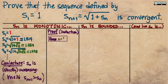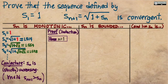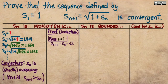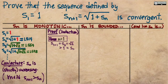Like many proofs quantified on all natural numbers, we'll use proof by mathematical induction. Our base case is n equals one, where the proposition becomes the statement that s₂ is greater than s₁. Is that true? s₂ is the square root of two, s₁ is one, and yes, the square root of two is greater than one. So the base case is established.